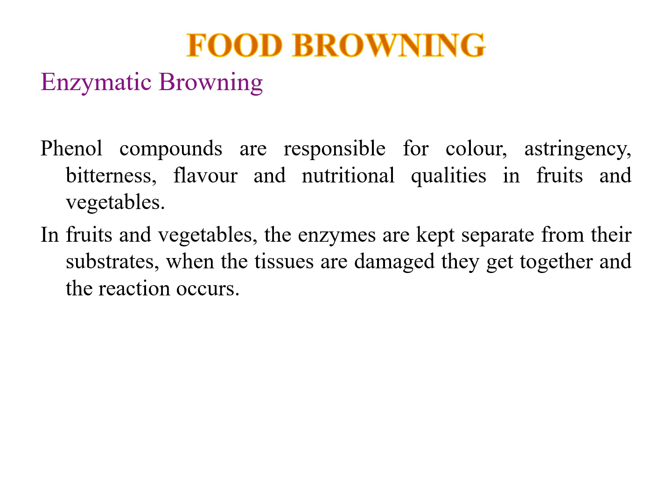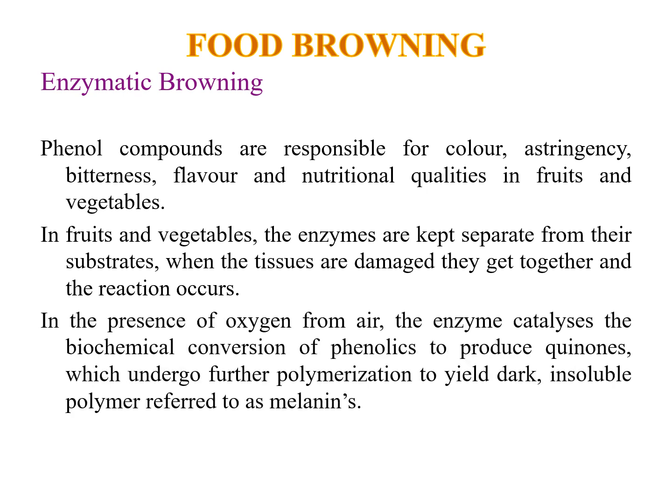In fruits and vegetables, enzymes are kept separate from their substrates. When the tissue is damaged, they come together and the reaction occurs. A slight barrier layer protects the phenols from contacting the enzymes. When damage happens, phenols come into contact with the enzymes present in the cell structures, the reaction begins, browning progresses, and finally produces a dark brown pigment called melanin — the end product of enzymatic browning.